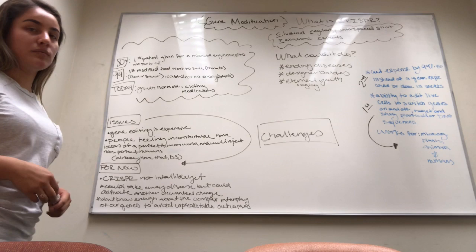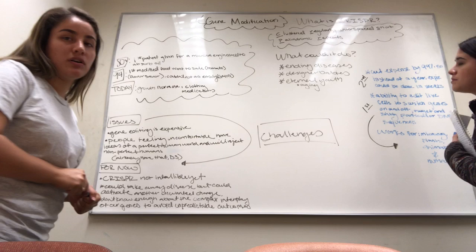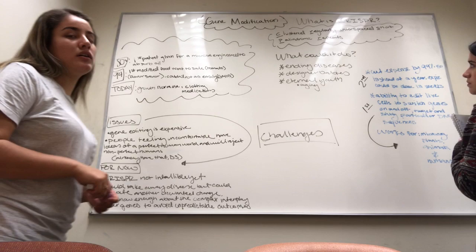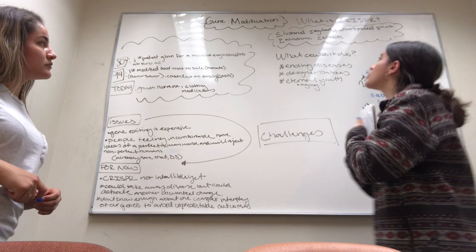Some issues that gene modification has brought is that gene editing has become really expensive. People feel uncomfortable and have developed the idea of a perfect world and how people will reject non-perfect humans. Because gene editing is so expensive, they developed CRISPR.